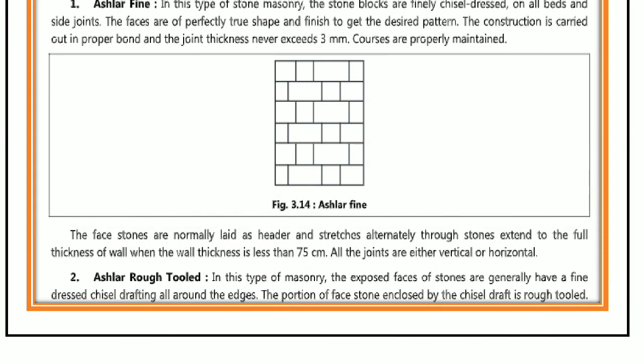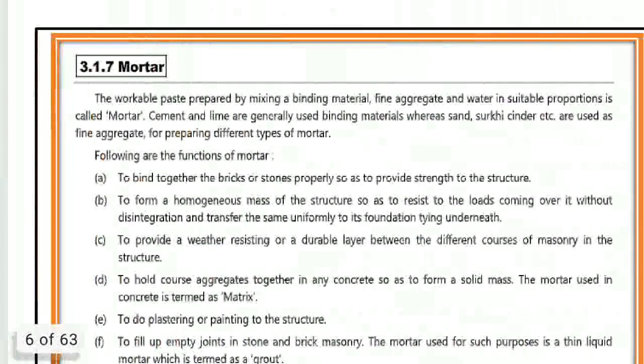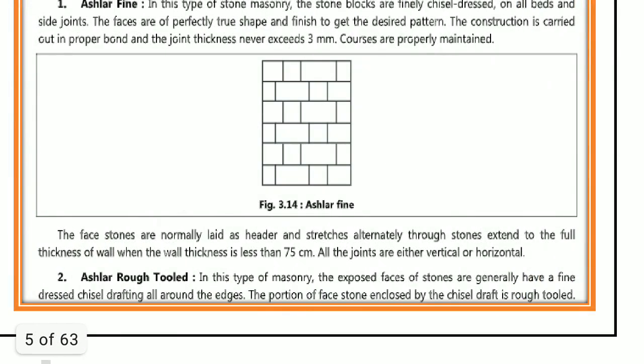Ashlar fine masonry: the beds, sides, and faces are finely chiseled. The stones are arranged in a proper bond and the thickness of mortar joints should not exceed 3 mm. Ashlar rub tooled masonry: the beds and sides are finely chisel dressed but the face is made rough by means of tools. A chisel draft about 25 mm wide is made by means of a chisel around the perimeter of every stone exposed for view. The thickness of mortar joints does not exceed 6 mm. This type of work is also known as bastard Ashlar.